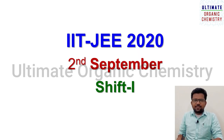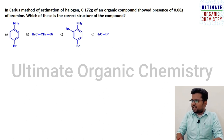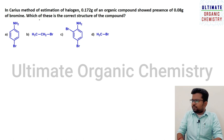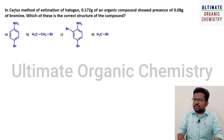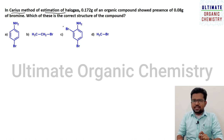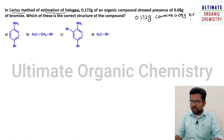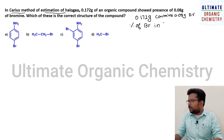Let us discuss the second September shift one questions. The first question: in Carrier's method of estimation of halogen, 0.172 gram of an organic compound showed the presence of 0.08 gram of bromine. Which of these is the correct structure of the compound? The information given is 0.172 gram of an organic compound contains 0.08 gram of bromine. What we need to find out is the percentage of bromine in this compound.